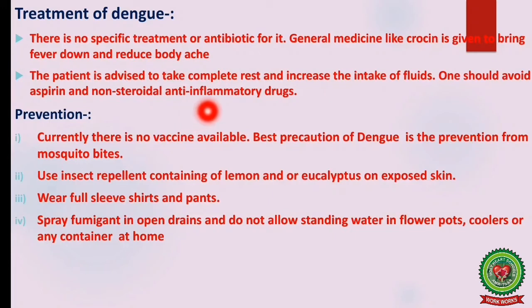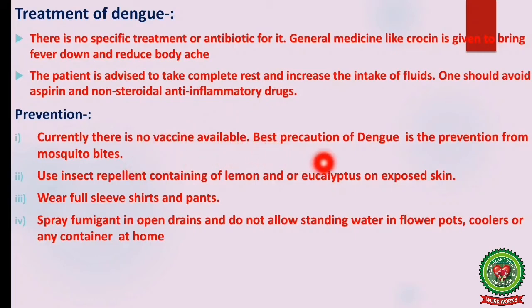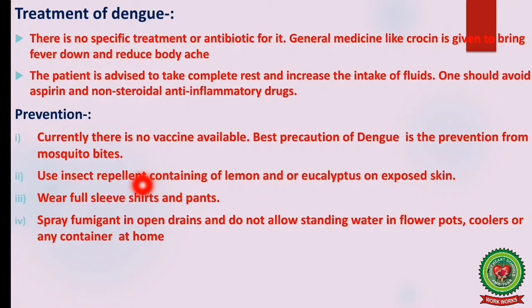There is no specific treatment or antibiotic for dengue. General medicine like Crocin is given to bring the fever down and reduce body aches. The patient is advised to take complete rest and increase fluid intake; one should avoid aspirin and non-steroidal anti-inflammatory drugs. Currently there is no vaccine available; the best precaution is prevention from mosquito bites — use insect repellent containing lemon and eucalyptus, wear full-sleeve shirts and pants, spray fumigant in open drains, and do not allow standing water in flower pots, coolers, or any container at home.